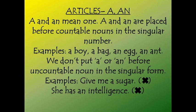We do not put a or an before uncountable nouns. For example, 'give me a sugar' is wrong because sugar is uncountable, so we cannot put a before it. Similarly, 'she has an intelligence' is a wrong sentence because intelligence is an uncountable noun. So we should not use a or an before uncountables — they should only be used before countable nouns in the singular form.